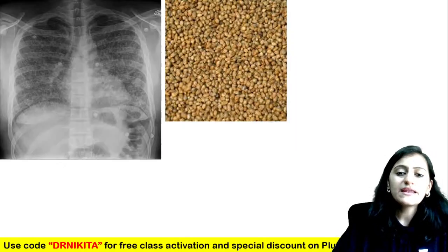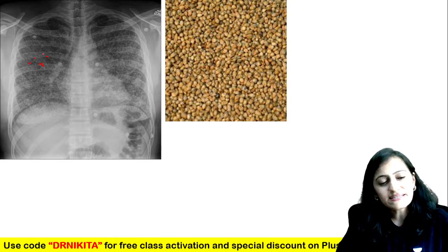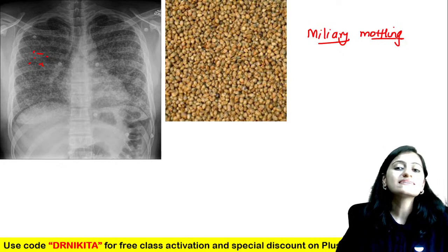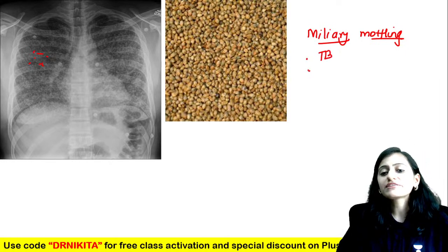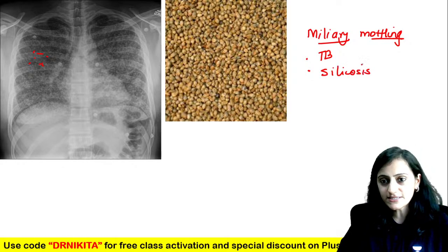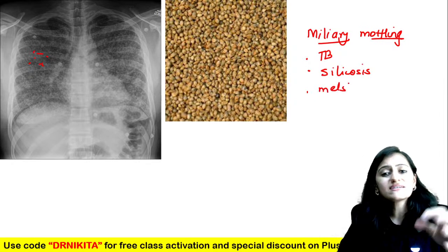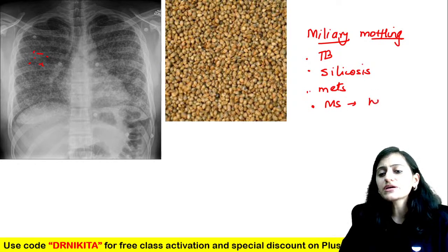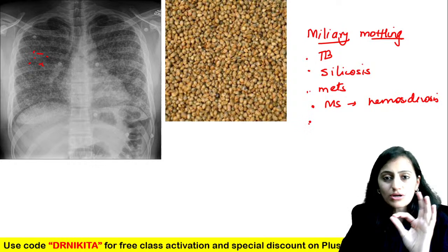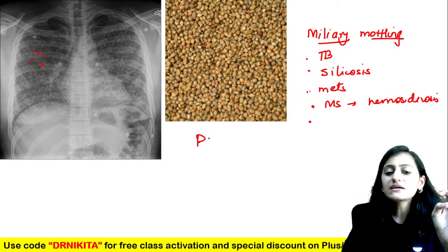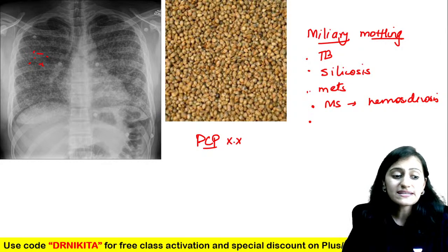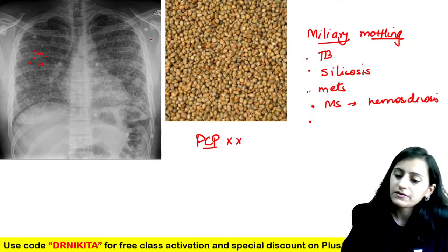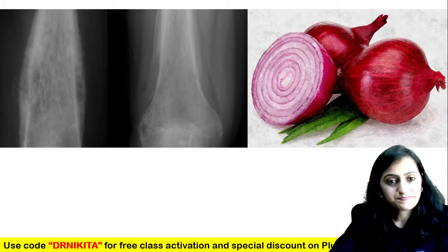These are the millet seeds — bilateral tiny tiny opacities in both lung fields — this is miliary mottling. Remember, not all miliary mottling is TB. Differentials include TB, occupational lung disease like silicosis, sarcoidosis, metastasis from thyroid, RCC, choriocarcinoma, and mitral stenosis leading to hemosiderosis. PCP pneumonia does not present with miliary mottling — it presents with bilateral perihilar ground glass opacity.